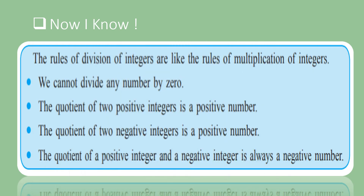The rules of division of integers are like the rules of multiplication of integers. We cannot divide any number by 0. The quotient of two positive integers is a positive number. The quotient of two negative integers is a positive number. The quotient of a positive integer and a negative integer is always a negative number.